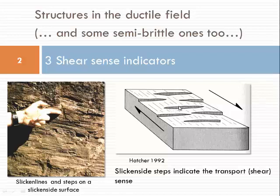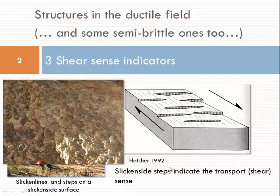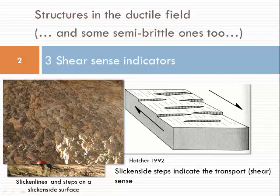The slicken side steps, which are perpendicular to these lineations, indicate the shear sense. This also works if fluid phases were introduced during fault formation and fibrous quartz has grown. We see here fibrous quartz growth on a fault from the Cape Fold belt, with slicken side steps facing to the left-hand side. A uniform left-facing fibrous lineation with steps indicates that the missing hanging wall block would have moved to the left.